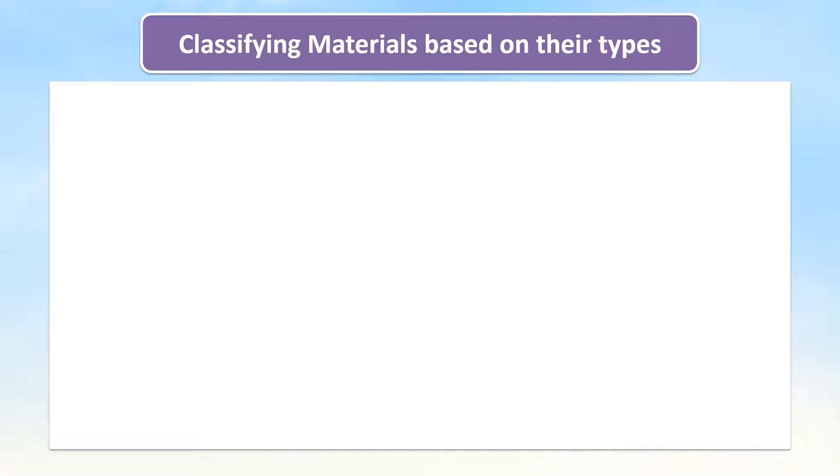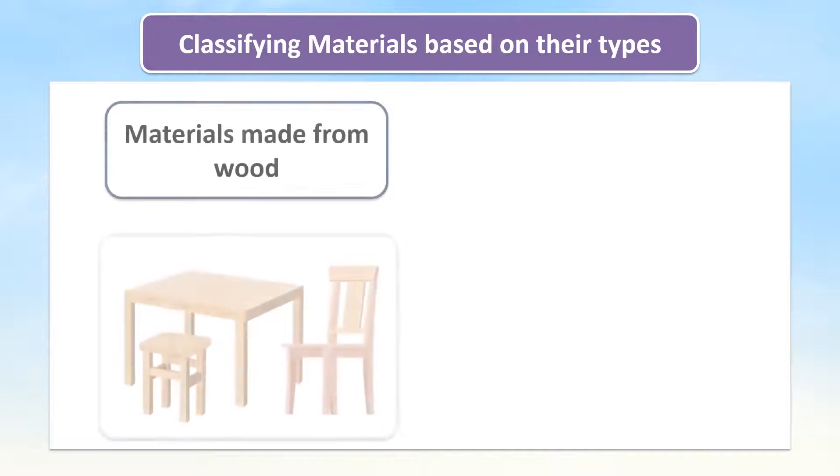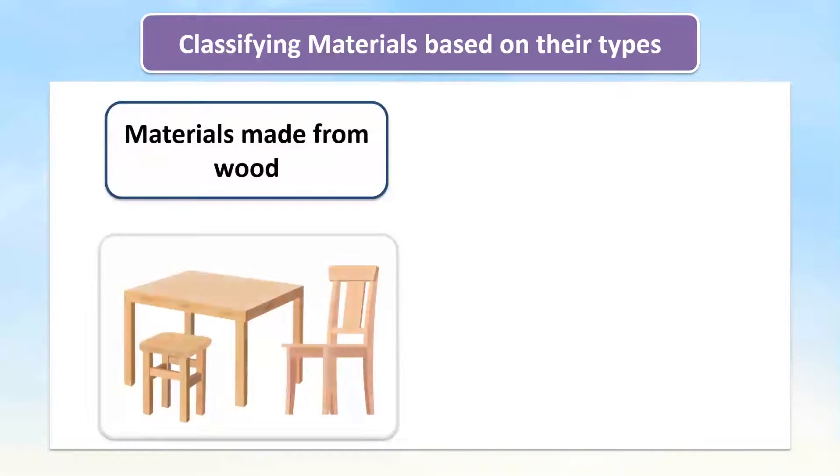We can also classify materials based on their type. There are materials made from wood and materials made from glass.